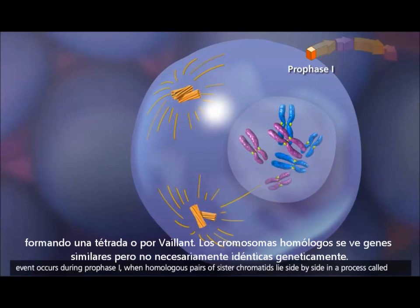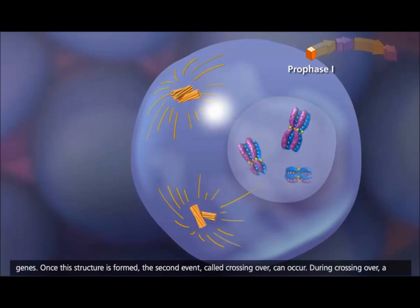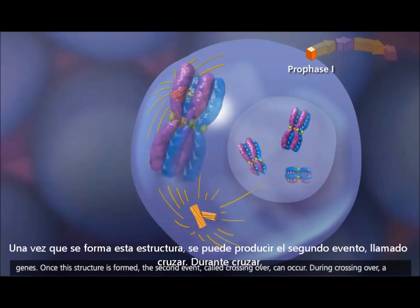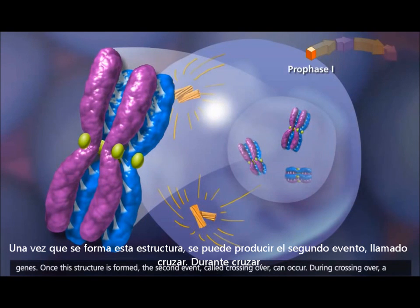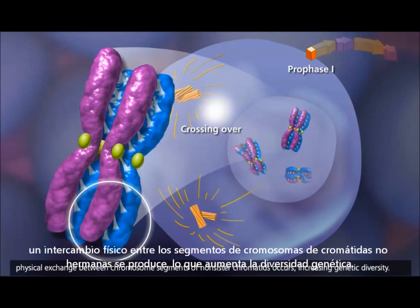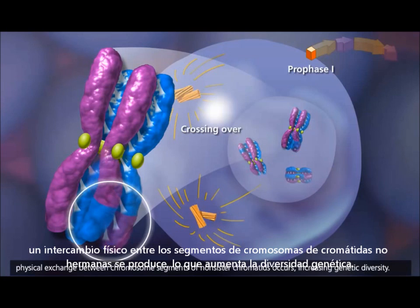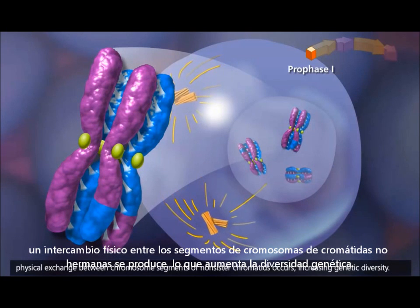The homologous chromosomes share similar but not necessarily identical genes. Once this structure is formed, the second event, called crossing over, can occur. During crossing over, a physical exchange between chromosome segments of non-sister chromatids occurs, increasing genetic diversity.